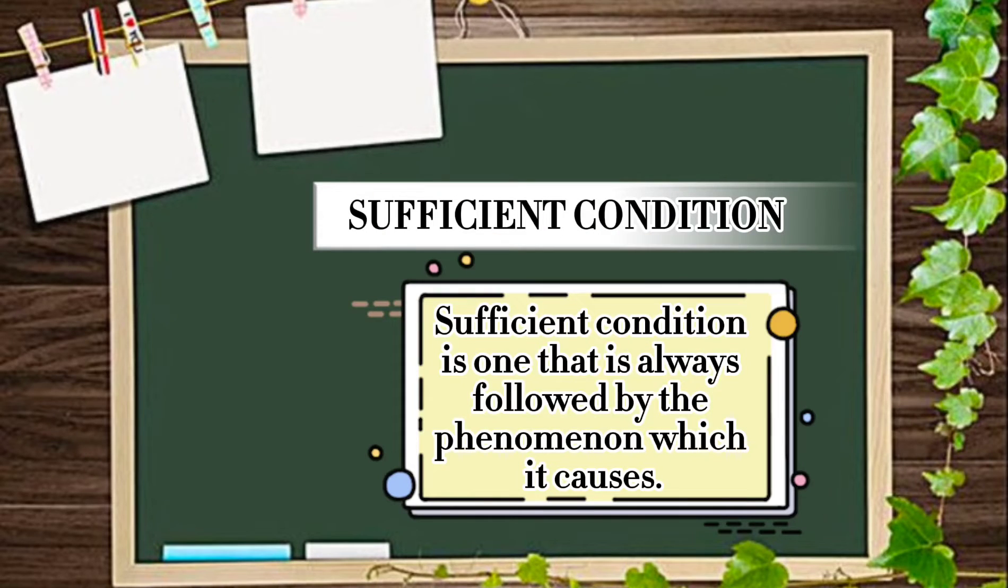Sufficient condition. Sufficient condition is one that is always followed by the phenomenon which it causes. In other words, if x is a sufficient condition of y, then whenever x occurs, y will always occur.